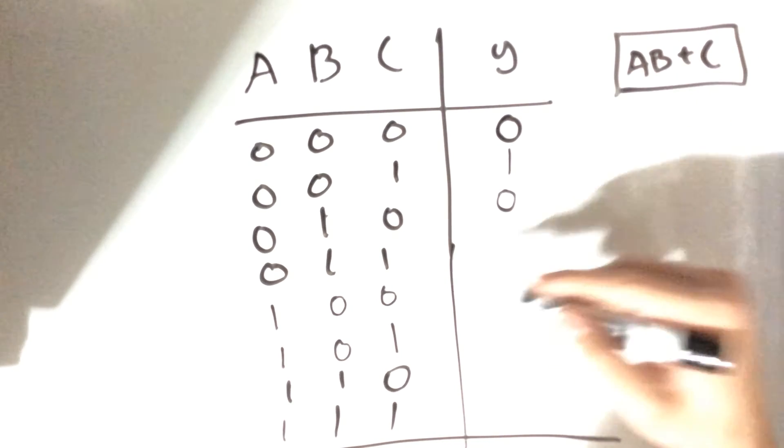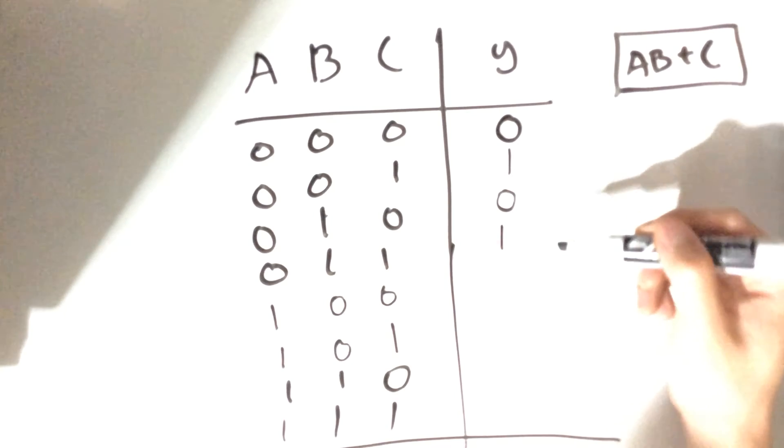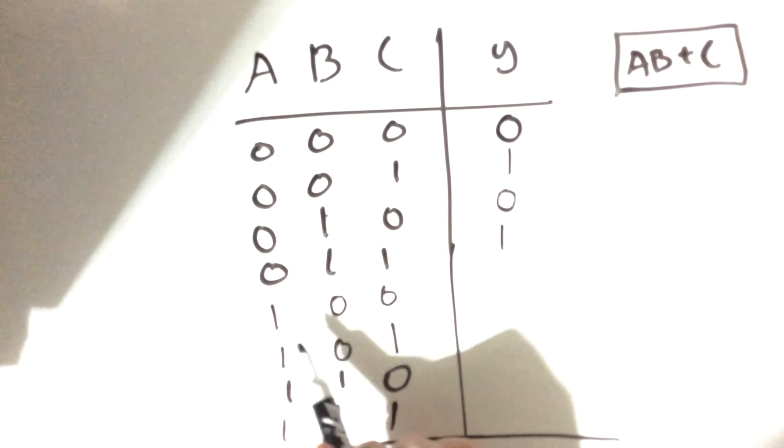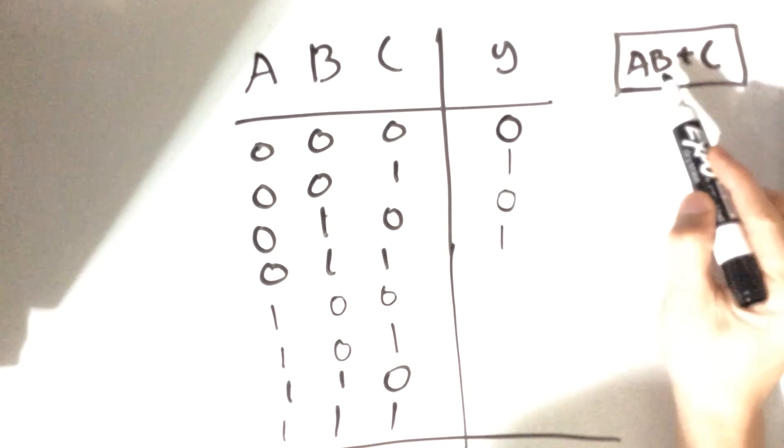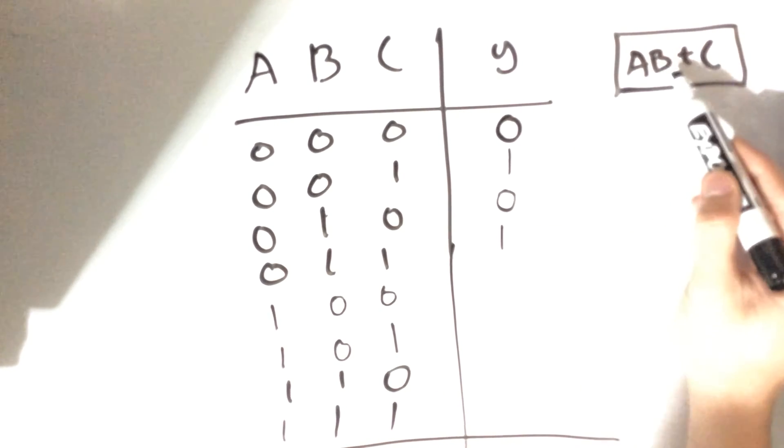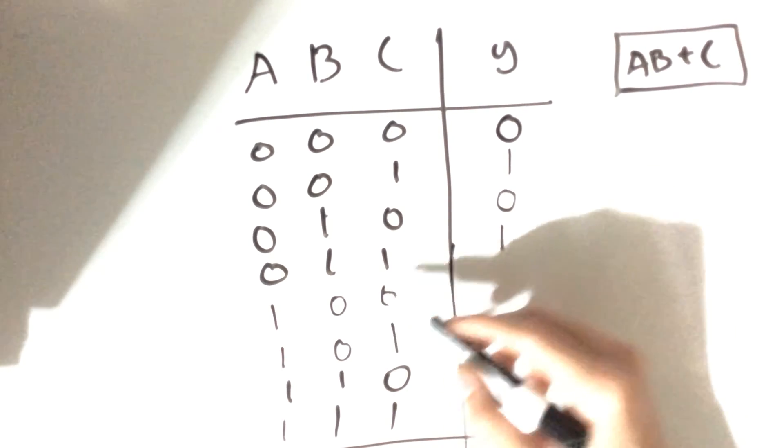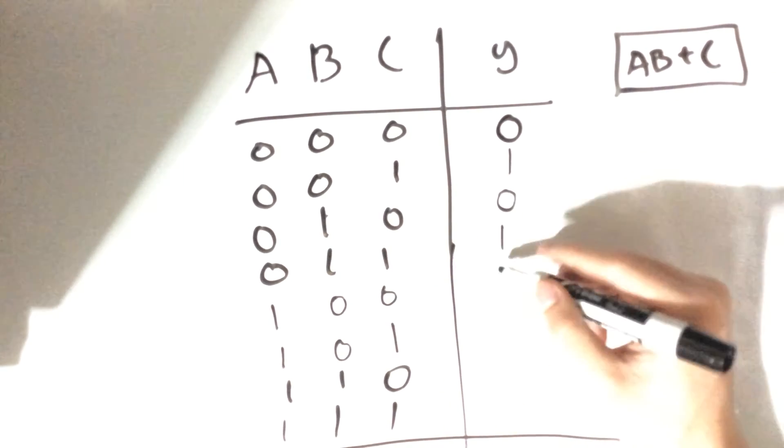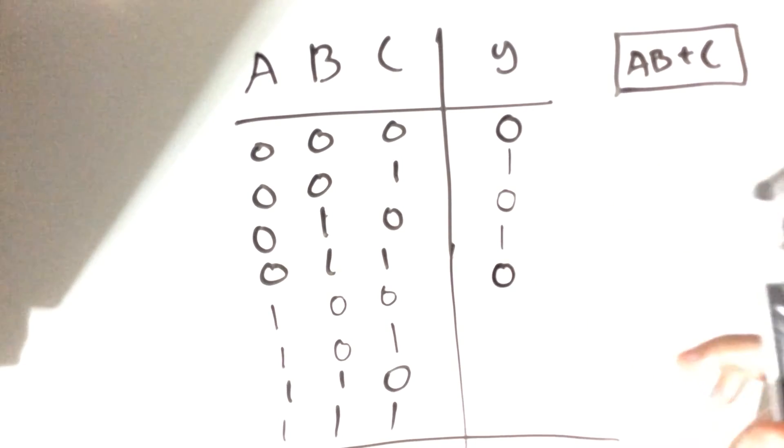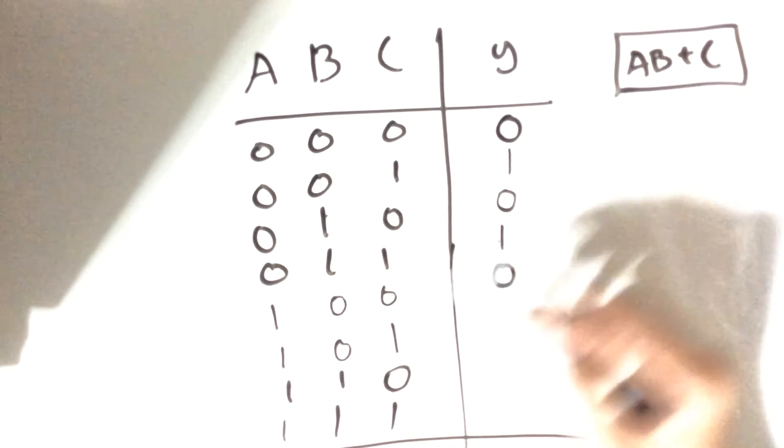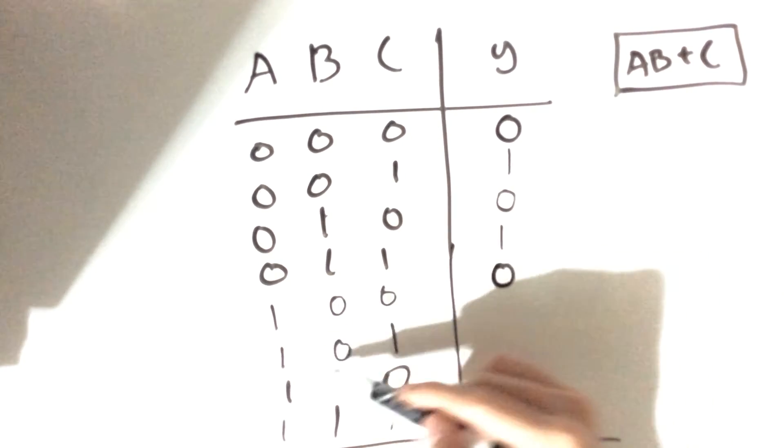Next we have 0 for A, 1 for B. So 0 and 1 gives us the value of 0, or 1 gives us the value of 1. Now 1 and 0 gives us the value of 0, and if we OR that with the value of 0, that's going to give us the value of 0.